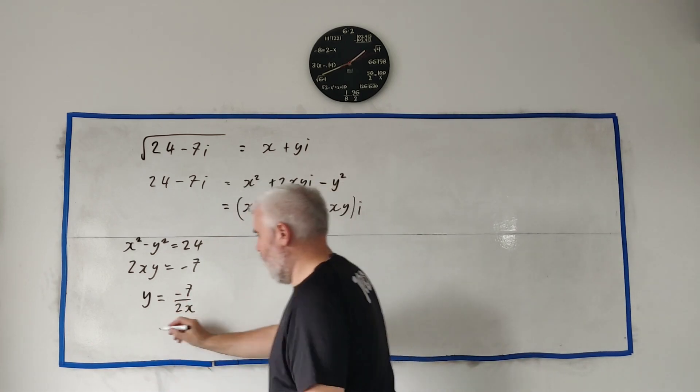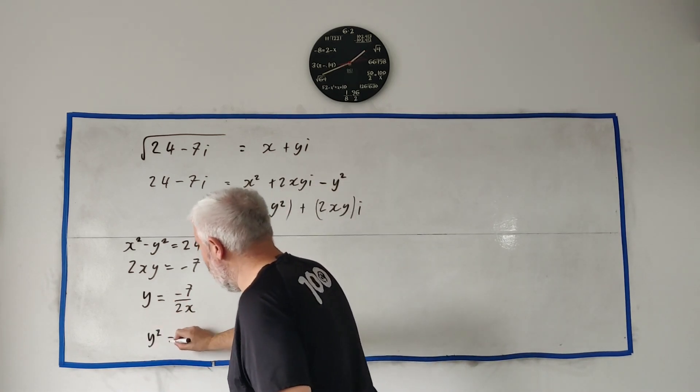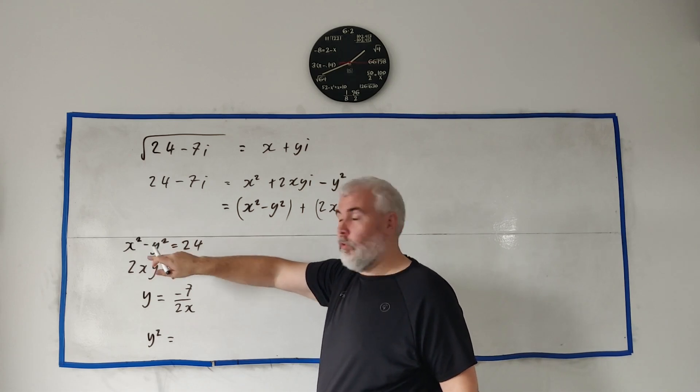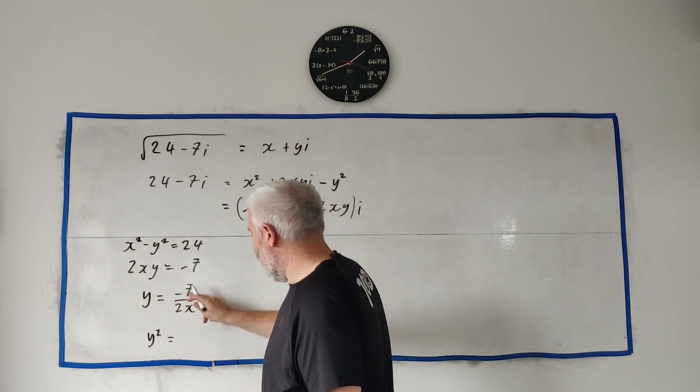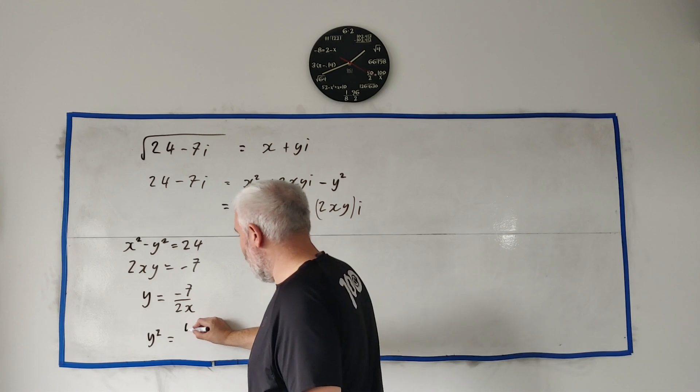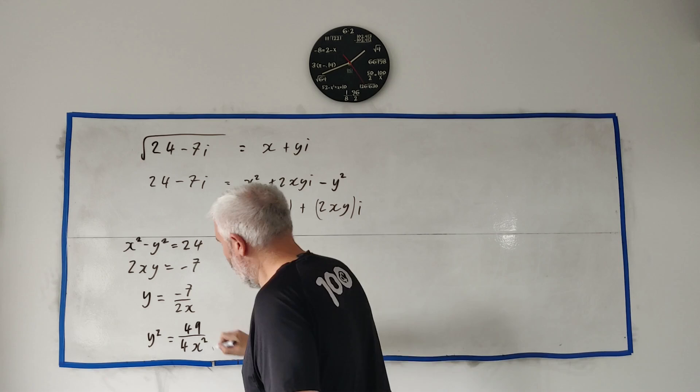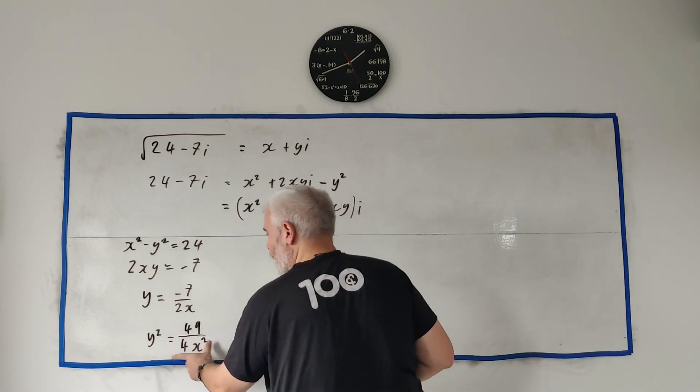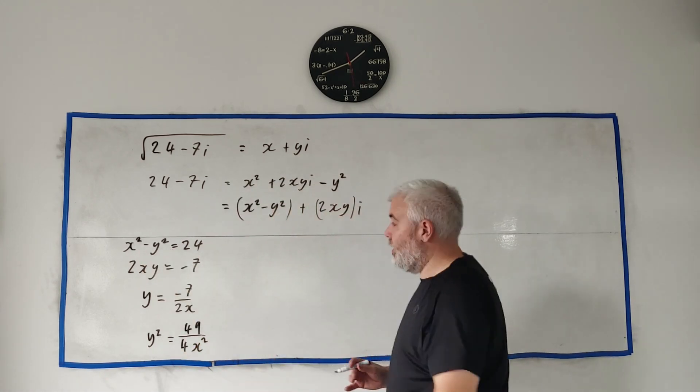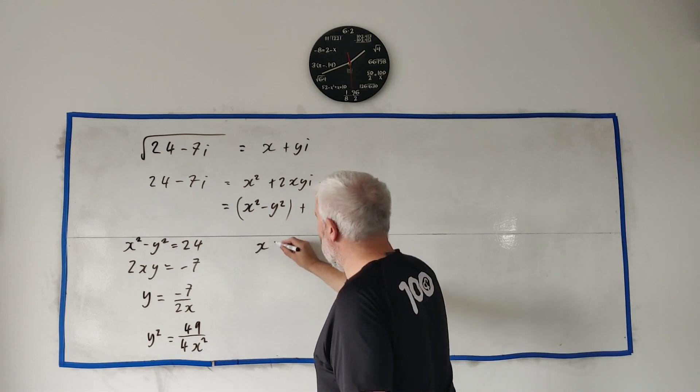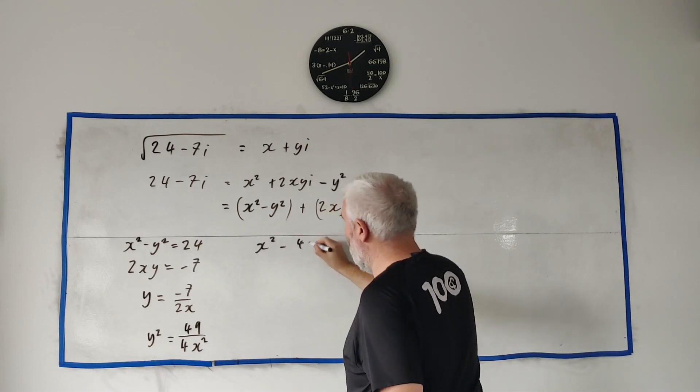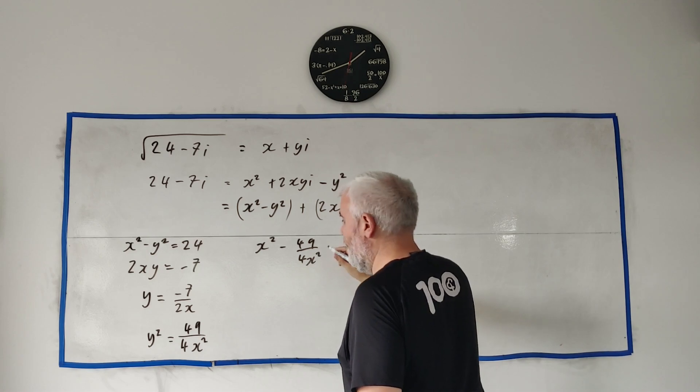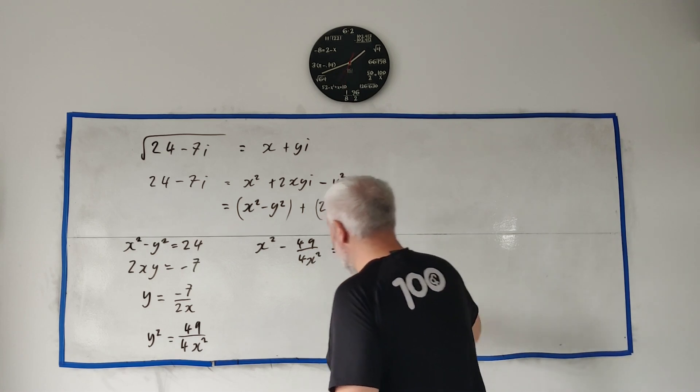Once you have that, well first maybe get y squared because we want to replace the y squared up here. So y squared is equal to minus 7 squared is 49 over 4x squared. Let's write this first term but putting in this y squared now, we get x squared minus 49 over 4x squared is equal to 24.